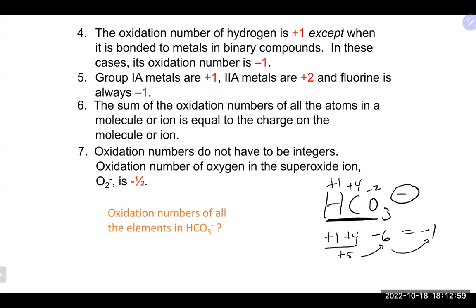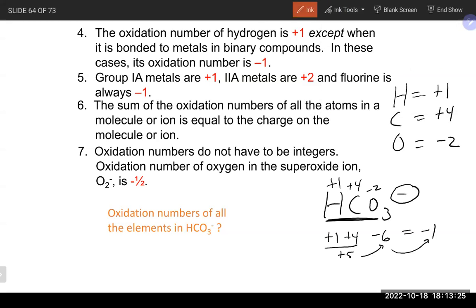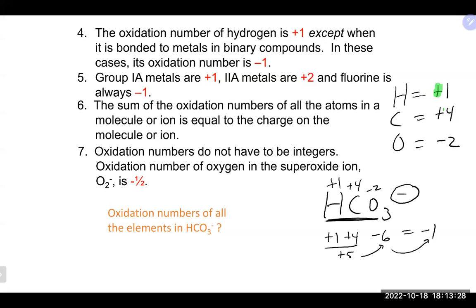When you are asked to give the oxidation numbers for each element, give the value per element — not the total. For carbon in bicarbonate, the answer is +4, not the sum for all atoms. Also, always include the charges — include the plus sign for positive oxidation states and the negative sign for negative ones.